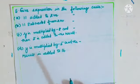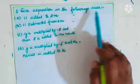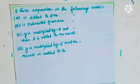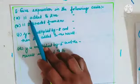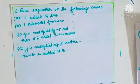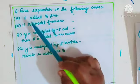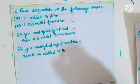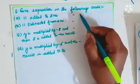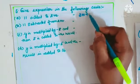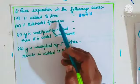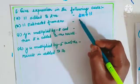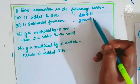The fifth question: give expressions for the following cases. '11 added to 2m' — write as 2m + 11. '11 subtracted from 2m' — 2m minus 11.